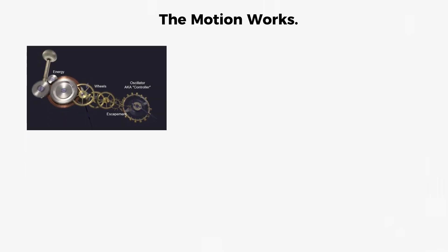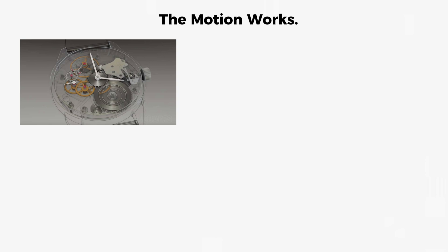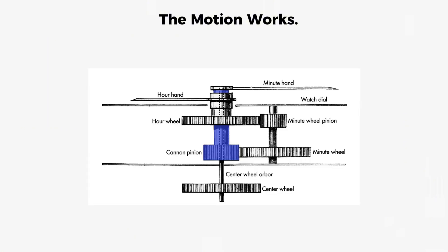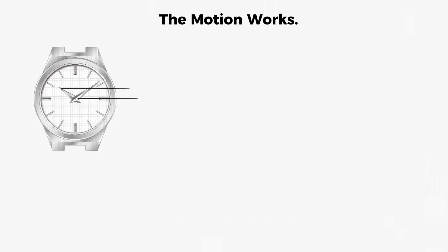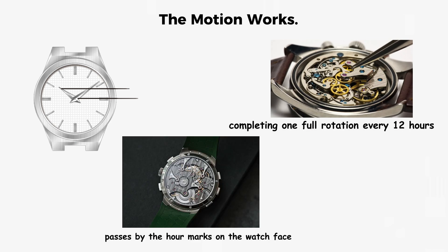The motion works. The motion works is a separate gear system that performs two critical functions. It allows the watch hands to be freely rotated when setting the time, and it creates a 12 to 1 speed reduction for the hour hand. Since the center wheel and minute hand rotate once per hour, the hour hand needs to make a much slower journey, completing one full rotation every 12 hours as it passes by the hour marks on the watch face.